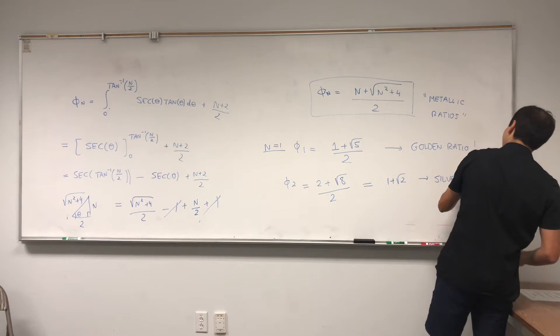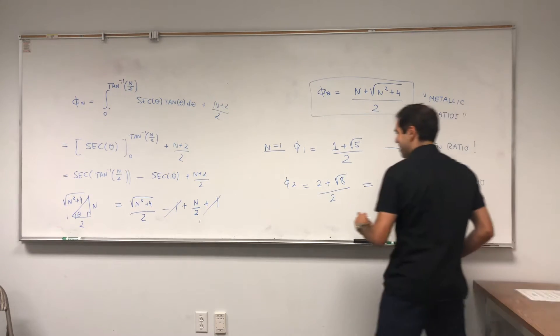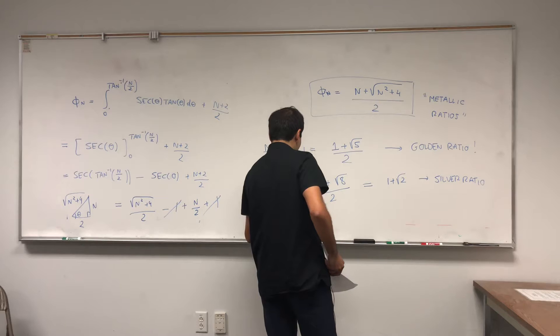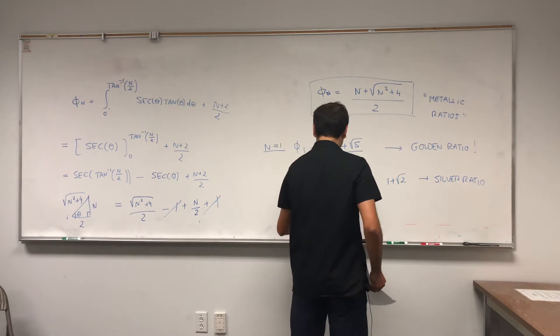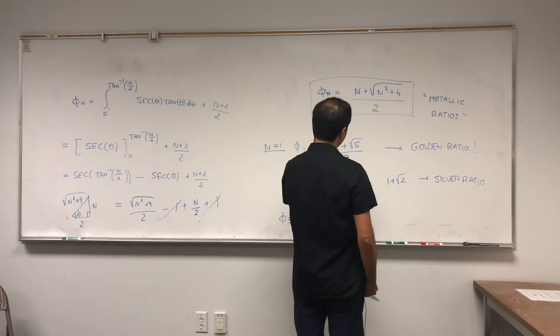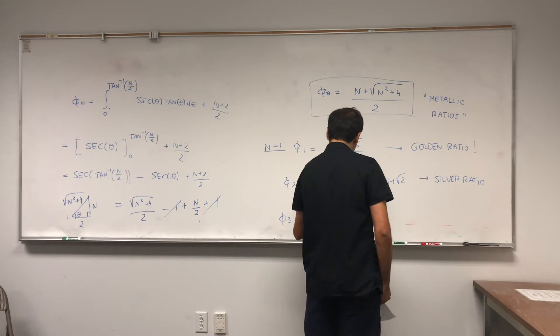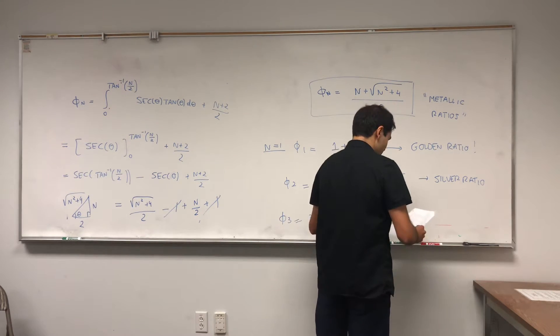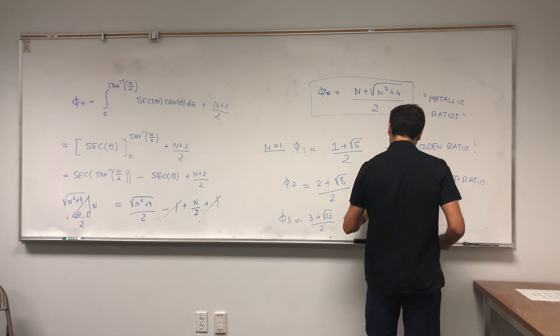Cool huh? And phi 3, one more. That's 3 plus, and 9 plus 4 which is 13, 3 plus square root of 13 over 2. That's called the bronze ratio.